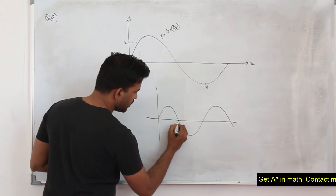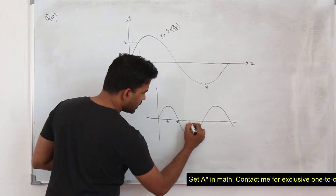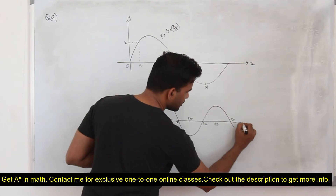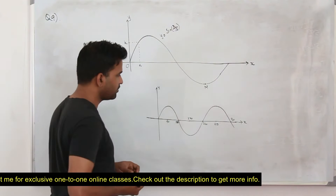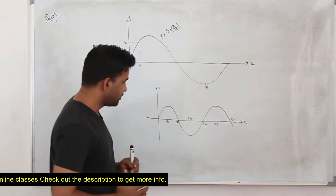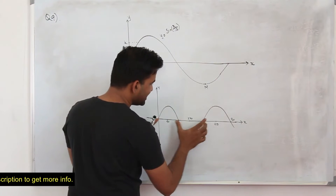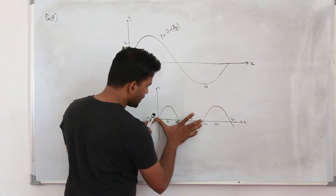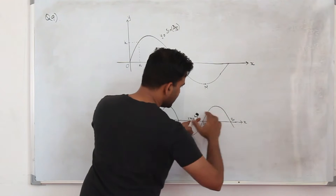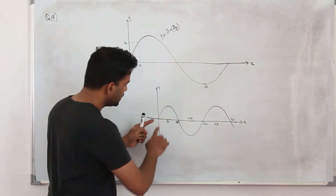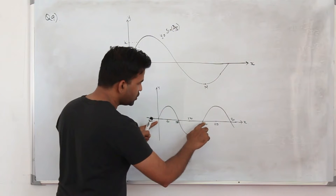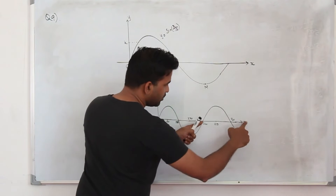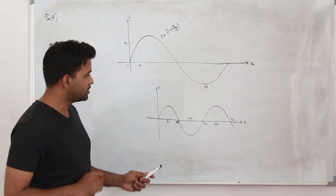On the sin x graph, key x-values are 0, 90, 180, 270, 360, 450, 540 degrees. The period is 360 degrees, because if you take the segment from 0 to 360 and paste it repeatedly, you get the continuous graph. In radians, the period of the sin graph is 2π.